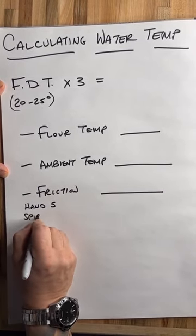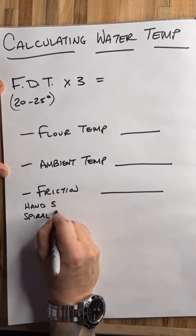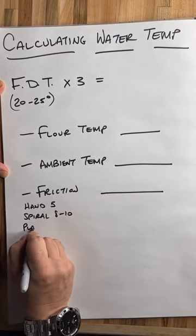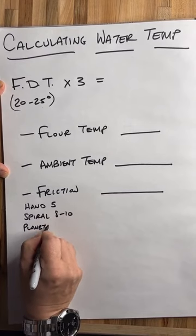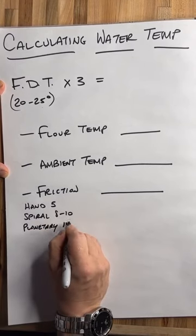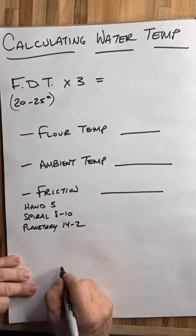If you use a spiral mixer, spiral mixers generally are between 8 to 10 degrees. And then planetary mixers like a Hobart or a KitchenAid, those range between 14 to 20. I missed the zero there.